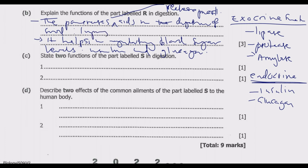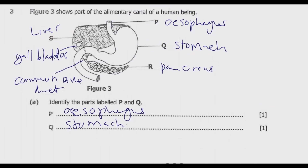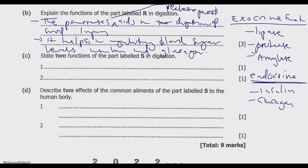Question C asks you to state two functions of the part labeled S in digestion. S is the liver. There are a lot of functions of the liver — as mentioned, the liver performs over 500 vital functions in the body. We need to focus on the key ones. What are the two key functions you can state?